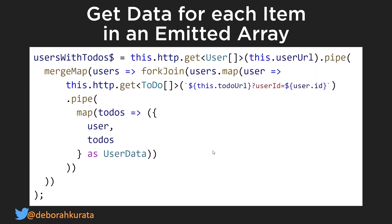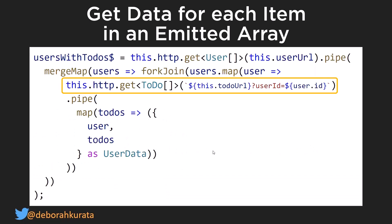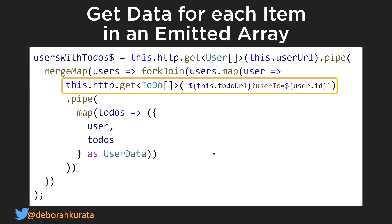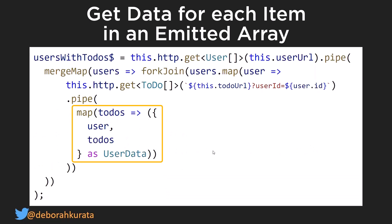Here we want to get all of the users, so we're going to get the array of users and for each user we're going to take that user information and get their to-dos. This is going to collect all of the users, then for each user it's going to get all of their to-dos and map them into a single structure with the single user and their array of to-dos.